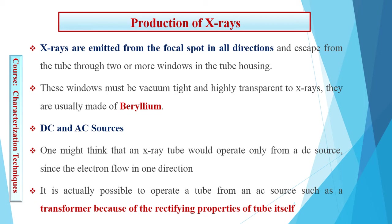Now, which source should we use — DC or AC? One might think that an X-ray tube would operate only from a DC source, since electrons flow in one direction. DC provides a steady, directional voltage with no fluctuation. However, the DC source is very expensive and its maintenance is also very expensive, so it is not preferred for use in an X-ray tube.